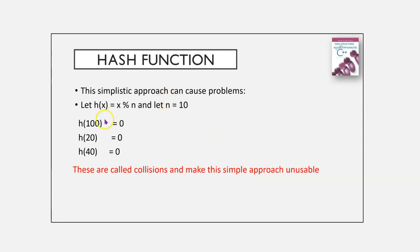However, this can cause problems. If we use that prior hash function, let n equals 10, h of 100 equals 0, h of 20 equals 0, and h of 40 equals 0. And that's called a collision.